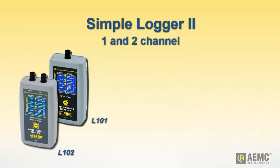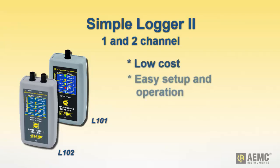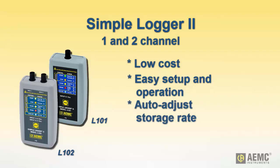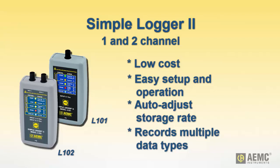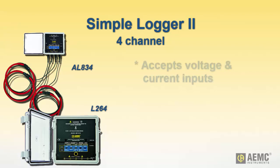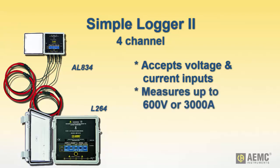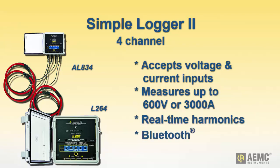These instruments are low-cost, battery-operated data loggers that require minimal user setup. They can automatically adjust their storage rate to optimize the recording of data, including temperature, events, thermistor, 4–20 mA, AC and DC voltage, and AC and DC current. The 4-channel models are used primarily to measure AC, and accept voltage, current probe, and current sensor inputs. Voltage inputs are directly measured up to 600 volts, and current inputs up to 3,000 amps. Two- and 4-channel models use captive AmpFlex current sensors. Harmonic measurements are available in real time, and for some models, Bluetooth communication provides data transfer from the instrument to a computer.